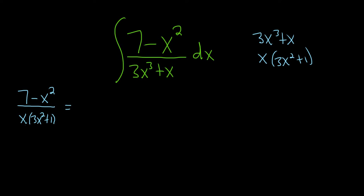This is equal to, well the first piece is linear so it'll just be A over x. And the second piece is 3x squared plus 1. That's a quadratic and so whenever you have that you have to have the Bx plus C. You always have to have that up top whenever it's a quadratic.